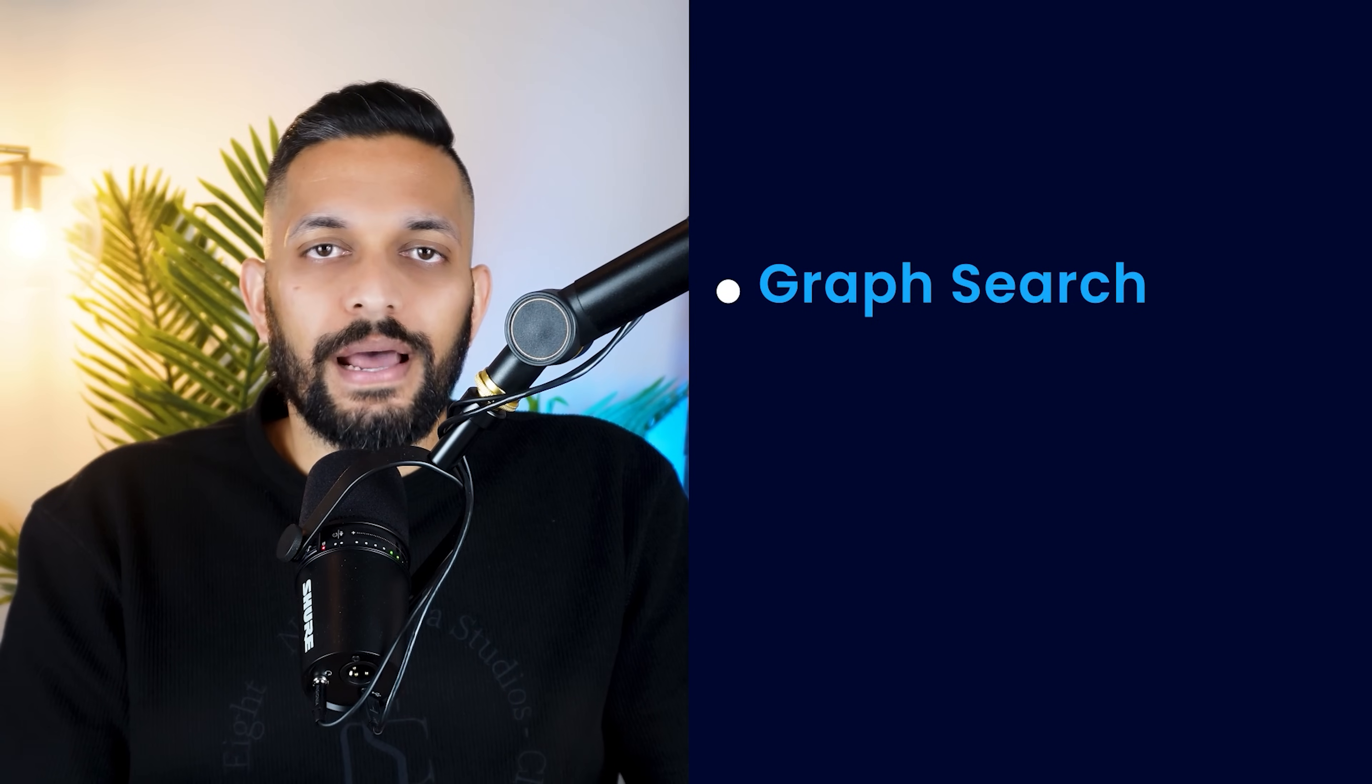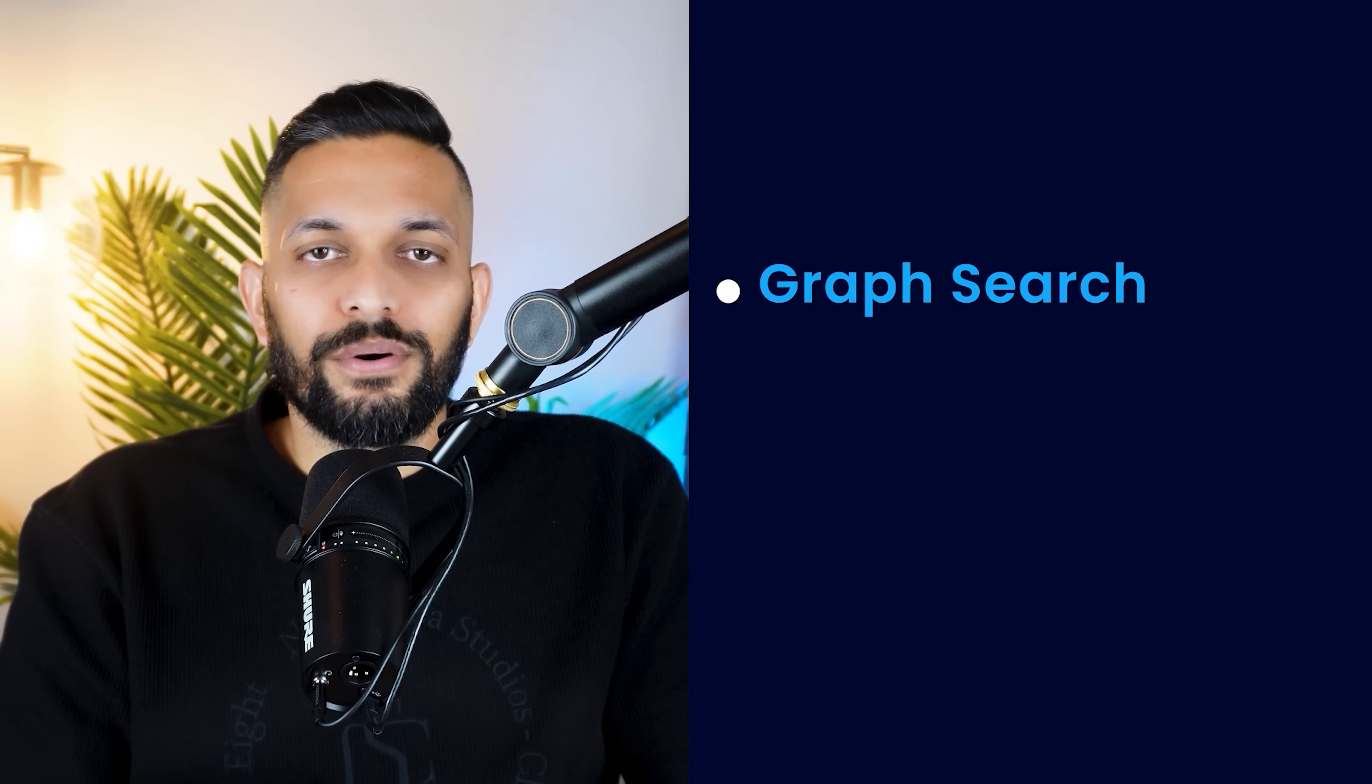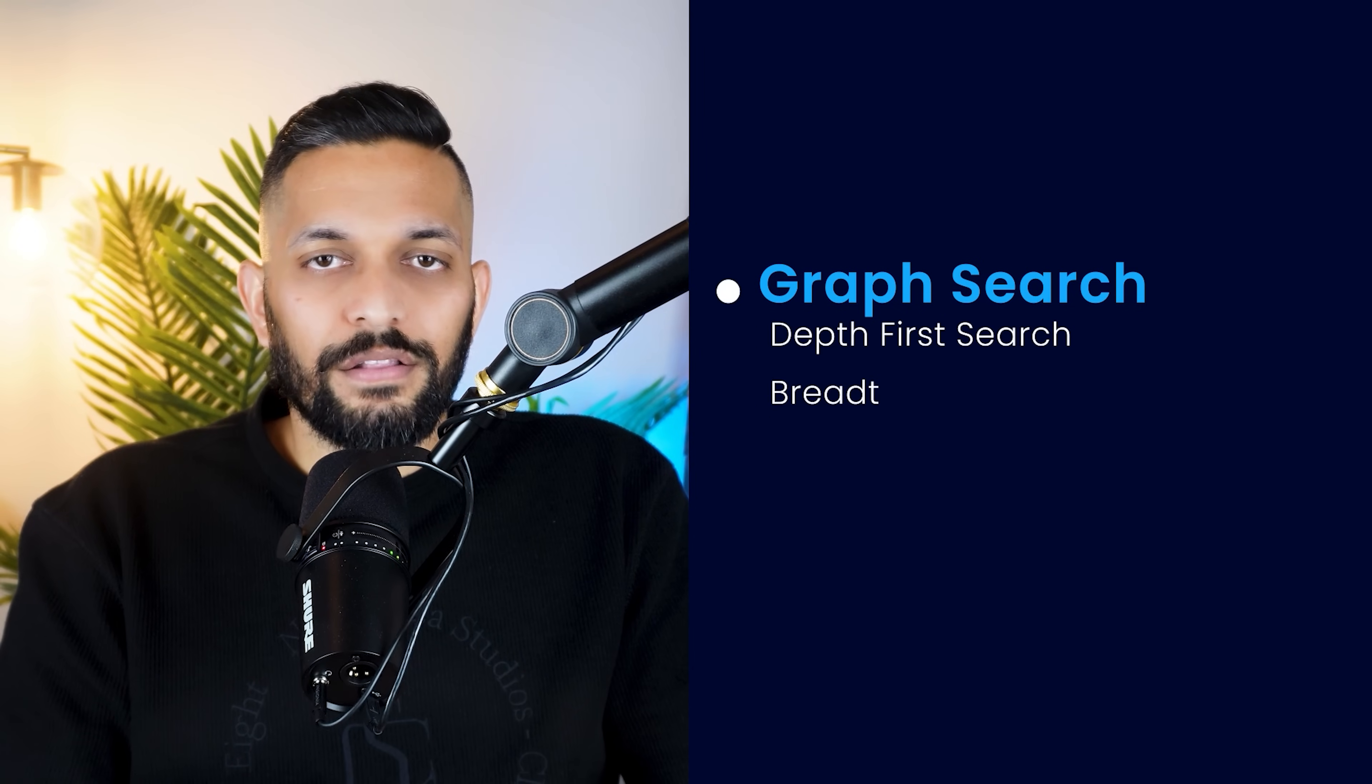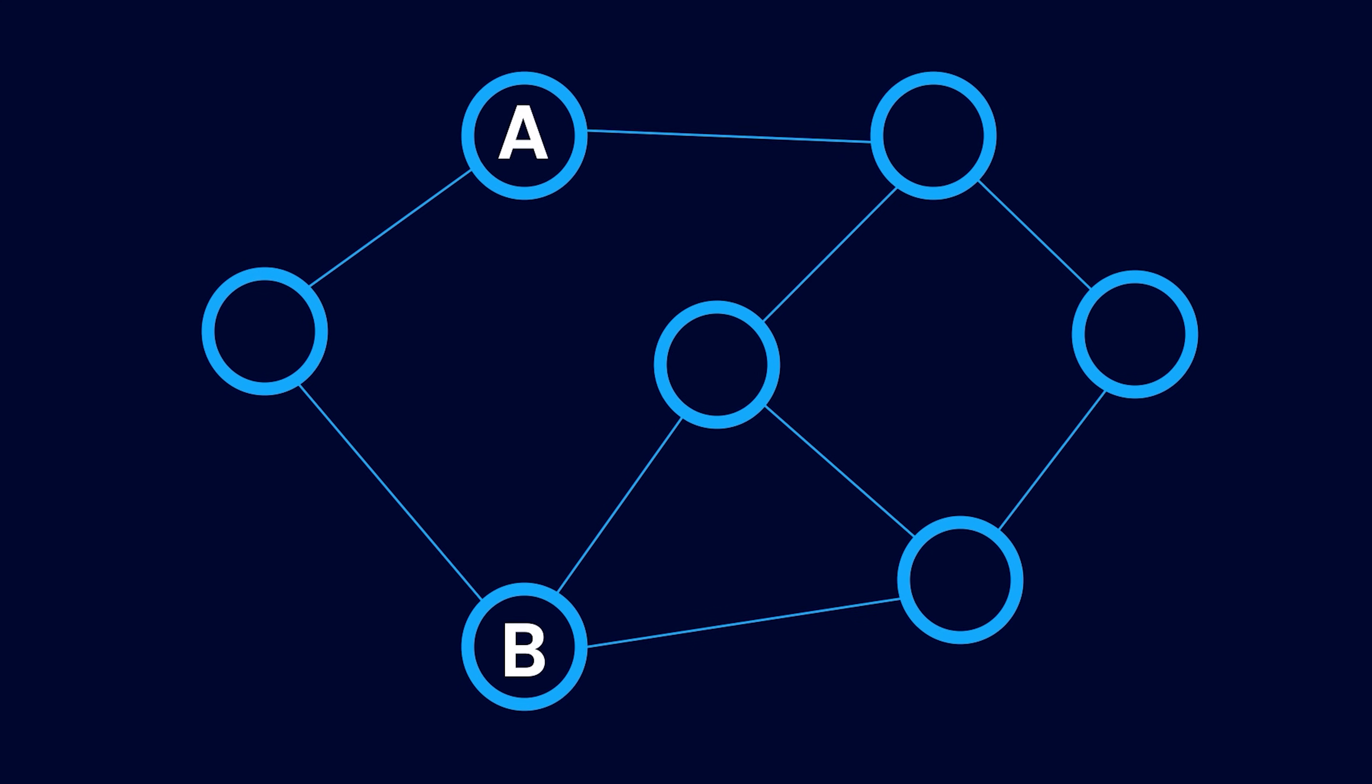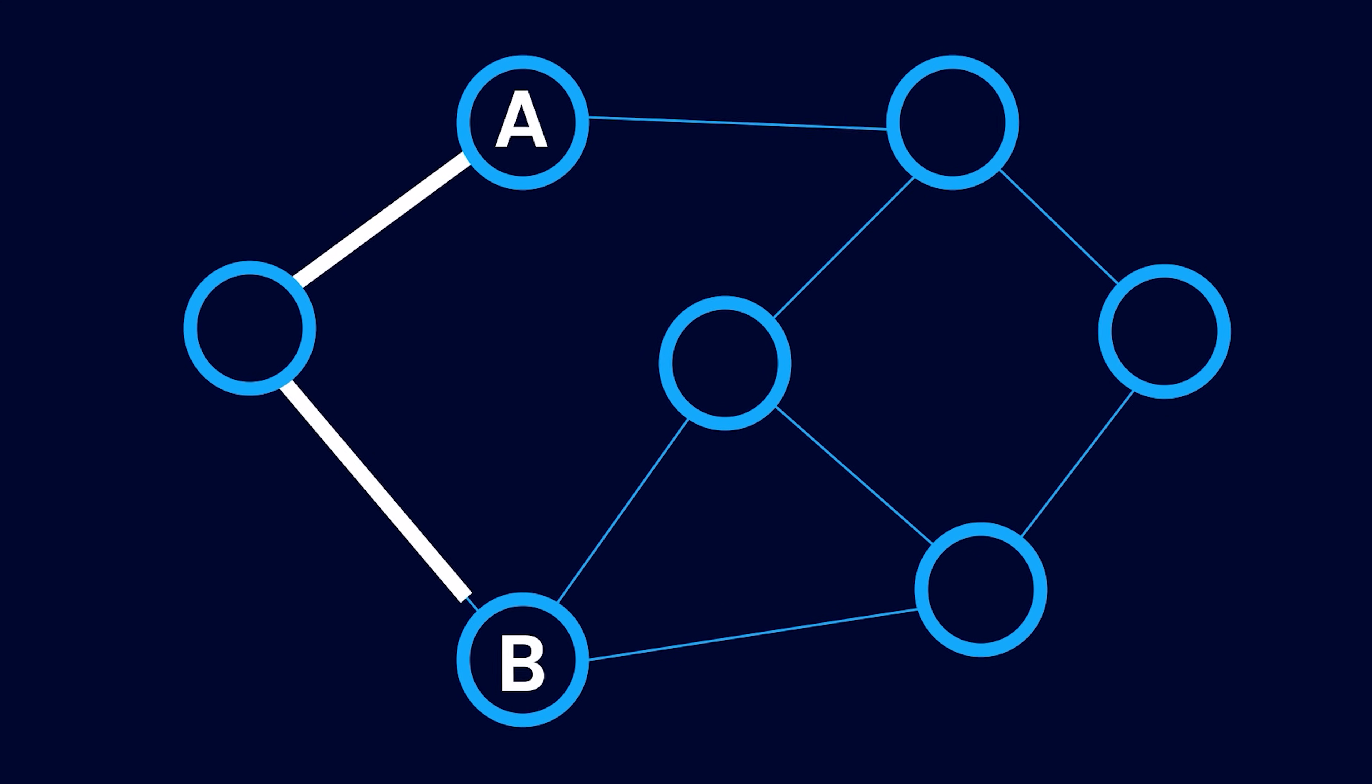Now that you know when to think about graphs, I want to tell you a few important graph-related concepts that you should read about. First is graph search. Some famous graph search algorithms that you should read about are depth-first search, breadth-first search, and Dijkstra's algorithm. The last two algorithms I mentioned are used to find the shortest path between two nodes on the graph.